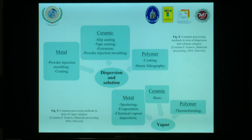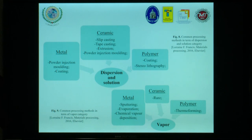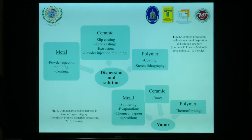The next category is dispersion and solution. For metal: powder injection molding and coating. For ceramic: slip casting, tape casting, extrusion, powder injection molding. For polymer: coating and stereolithography. For vapor: metal — sputtering, evaporation, chemical vapor deposition; ceramic — rare technology; polymer — thermoforming.